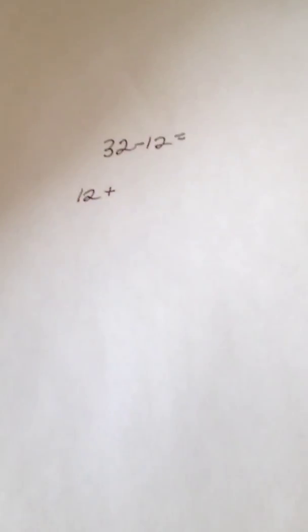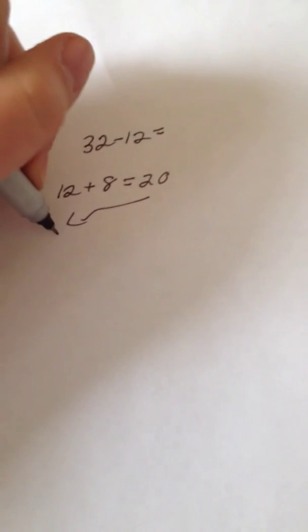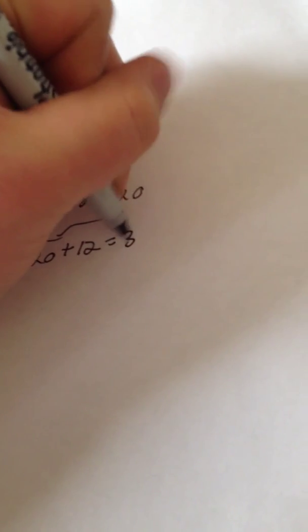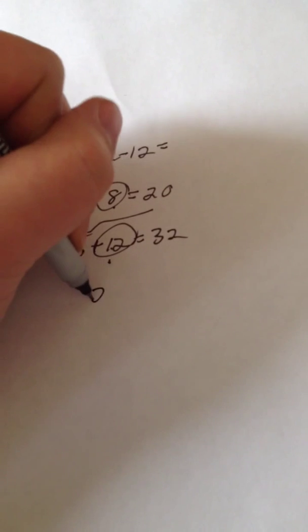So I start with 12. And what I would do is I would personally start by adding 8 to make 20. And my 20 is going to be added to 12 to make 32. And then I just have to add these two things together. 8 and 12 is 20.